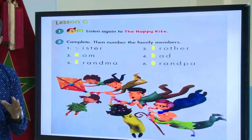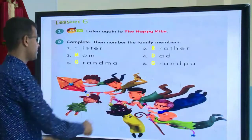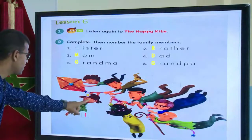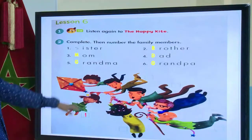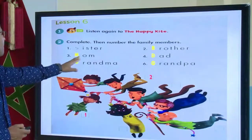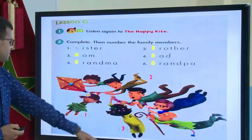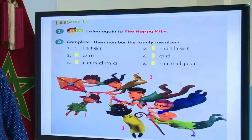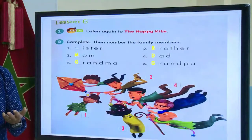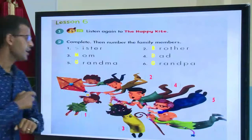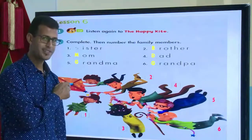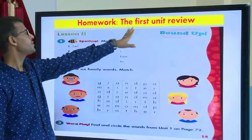The second task: you are going to number the family members in the pictures. Number one is sister — can you find sister? Good job, this is sister. Number two is brother — good job, this is my brother. Number three is mom — good, this is my mom. Number four is dad — good, this is my dad. Grandma — good job, this is grandma. And grandpa — good job, this is grandpa. Excellent work!